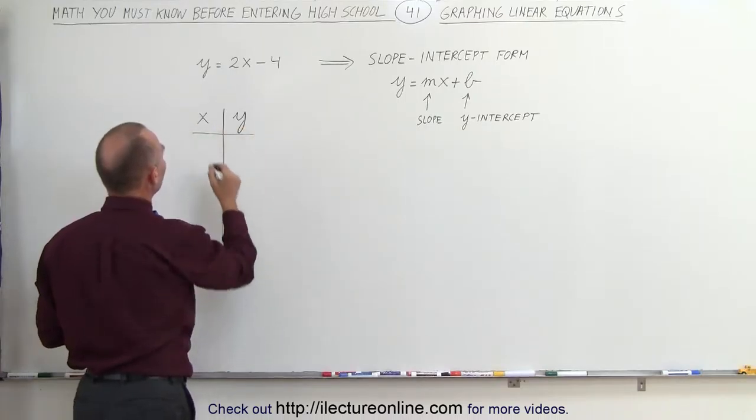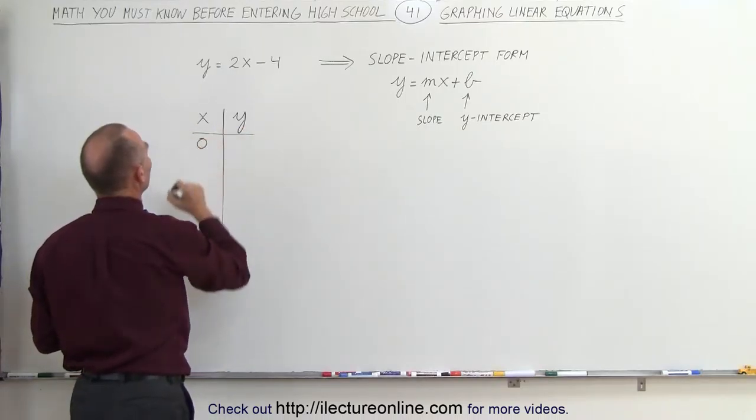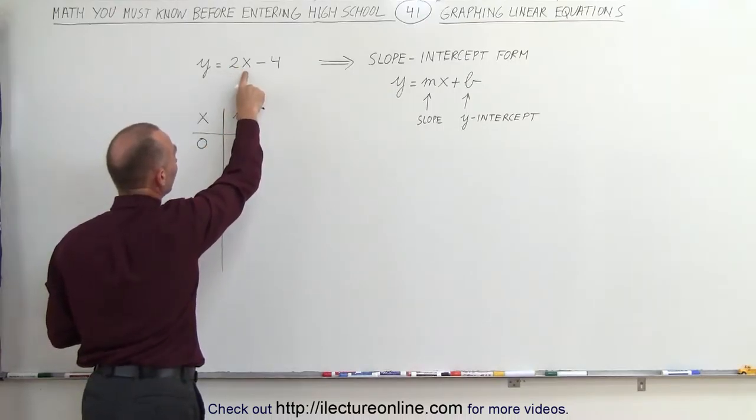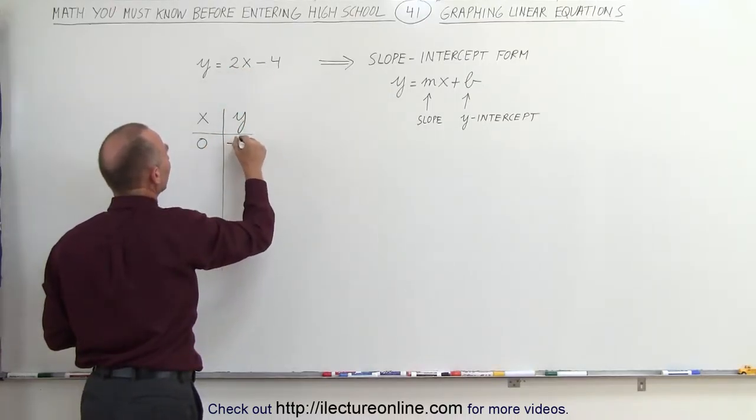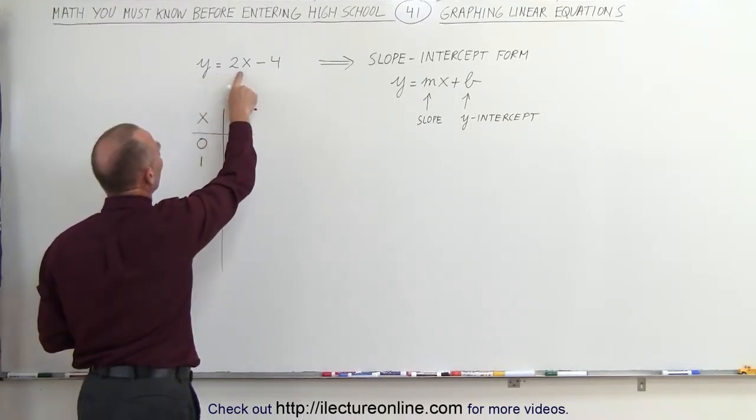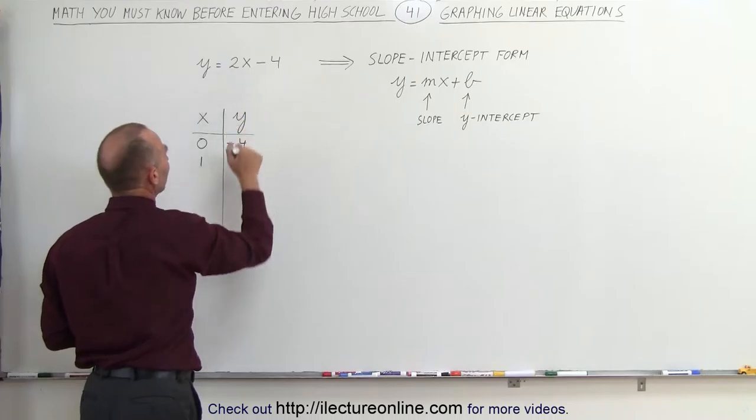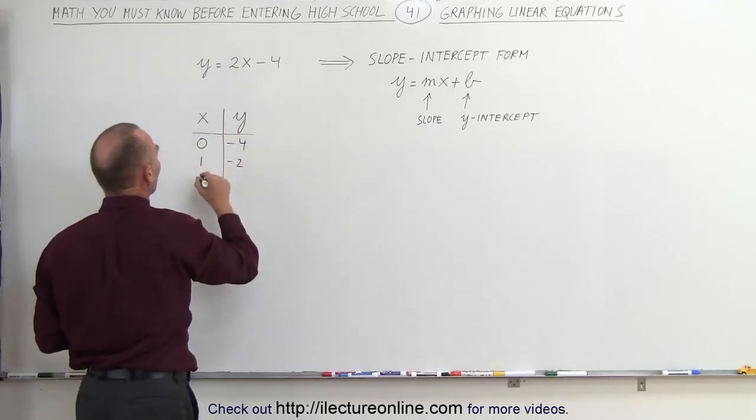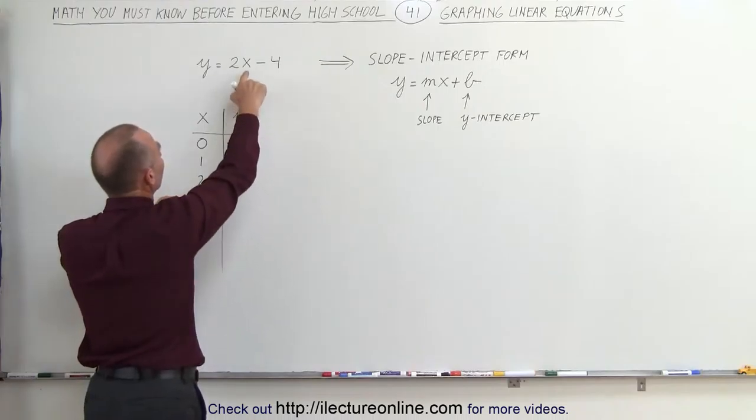First of all, let's say what happens when x is equal to 0. When I put a 0 in there, 2 times 0, which is 0 minus 4, gives me minus 4 for y. When I plug in the number 1, 2 times 1, which is 2 minus 4, gives me minus 2. When I plug in 2 for the value for x, 2 times 2 is 4 minus 4, gives me 0 for y.